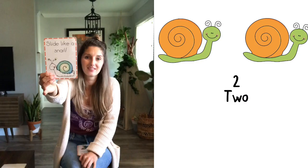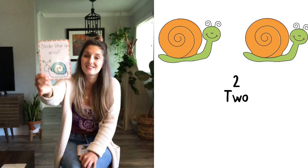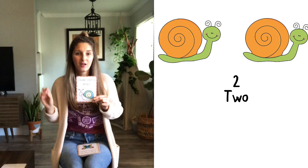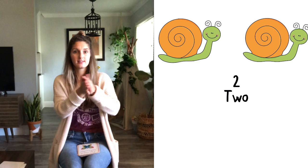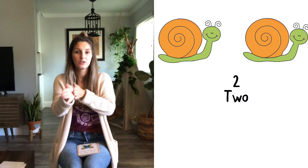Next, we have a snail. This says slide like a snail. How many snails are there? Let's count together this time. One, two, good, two snails. So we're gonna slide like this with our hands, two times. Ready? One, two. Good job, you slid like a snail.